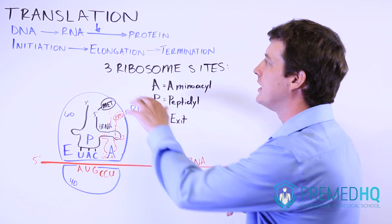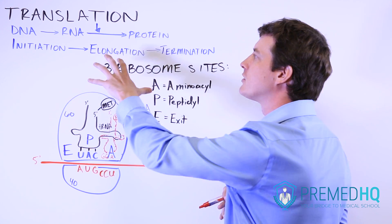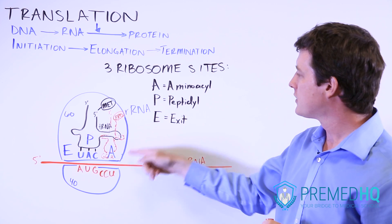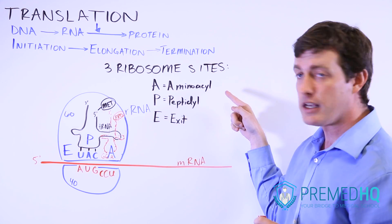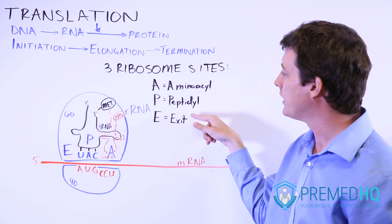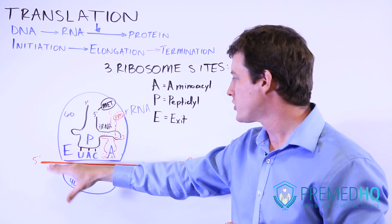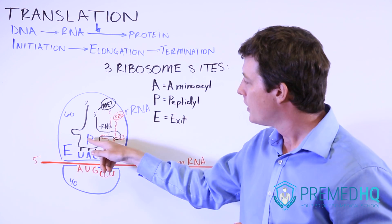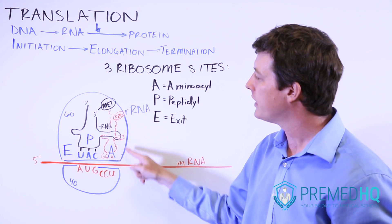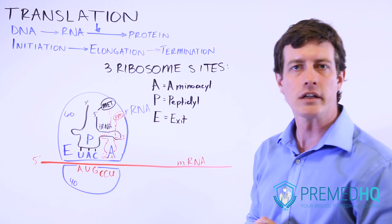So in order to understand the elongation part of translation, you need to know the three sites of the ribosome. There's the A site, which is the aminoacyl site; there's the P site, which is the peptidyl site; and there's the E site, which stands for exit. So it goes A-P-E, and that's the path that the tRNA will take as it moves along the ribosome.